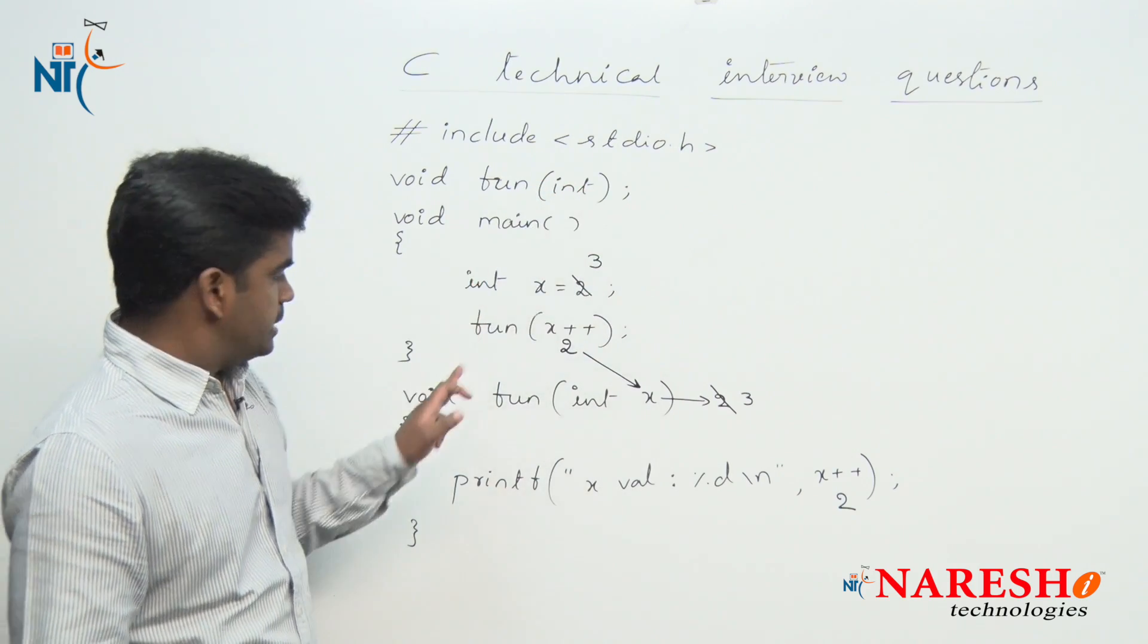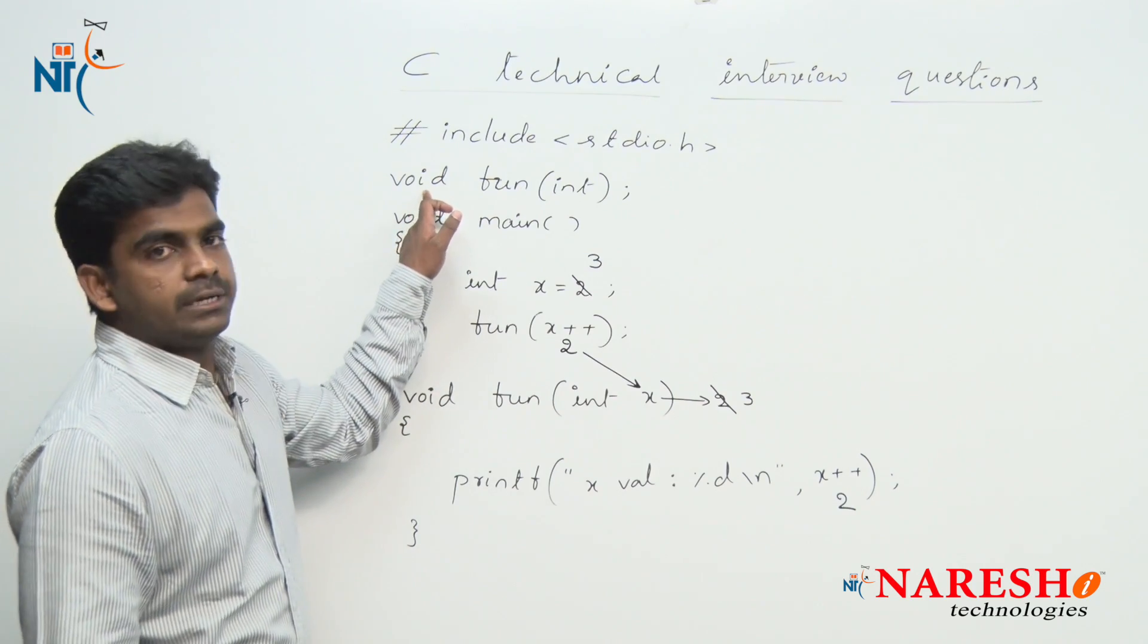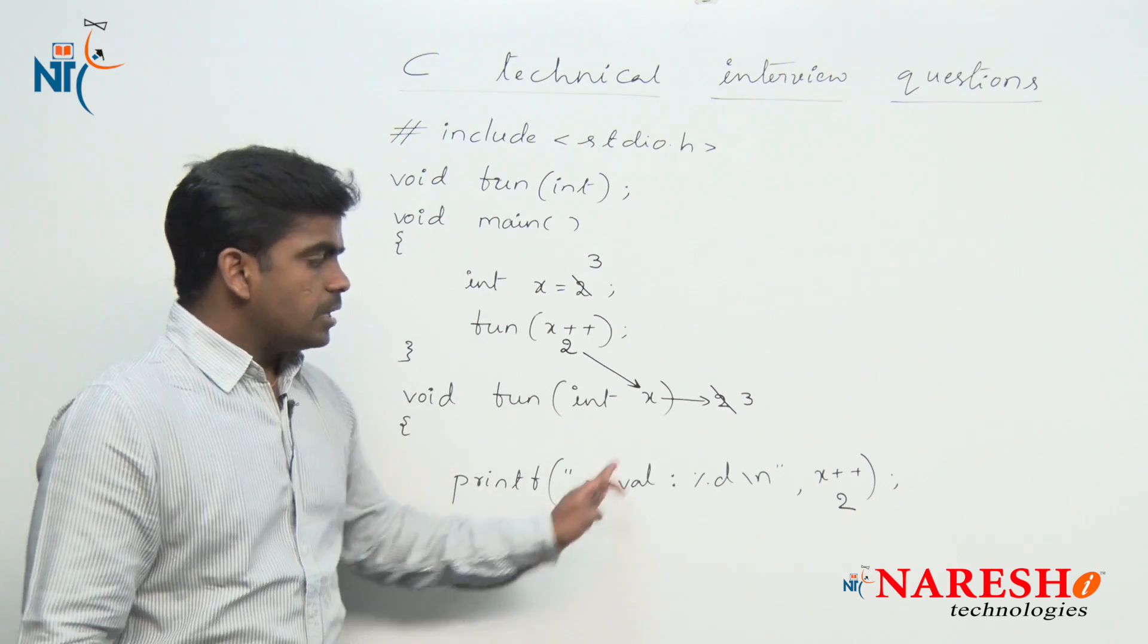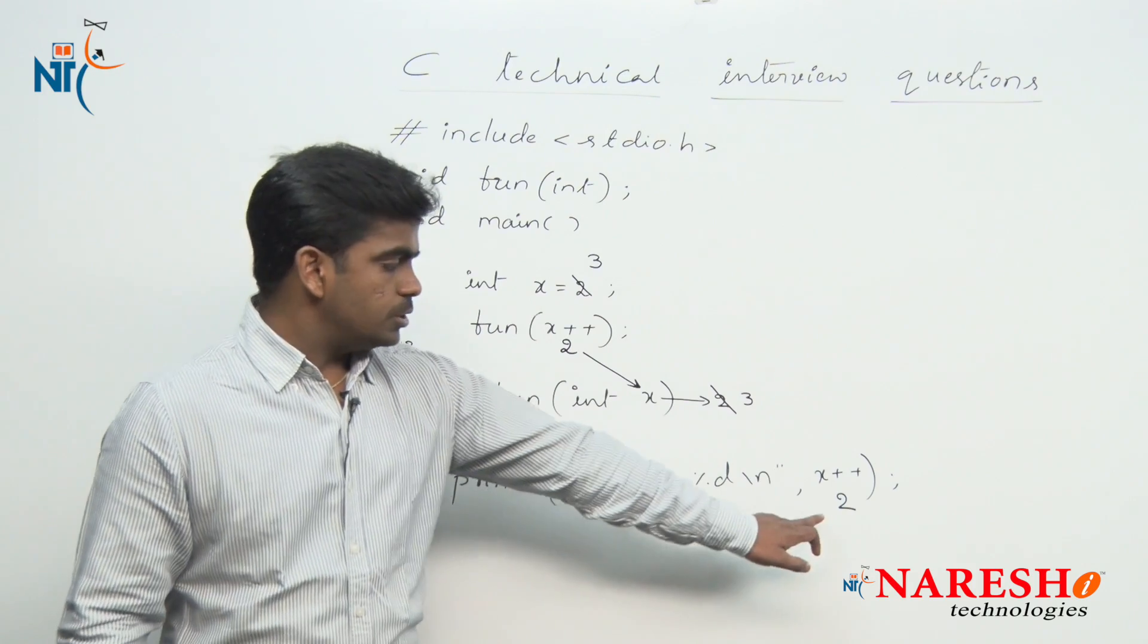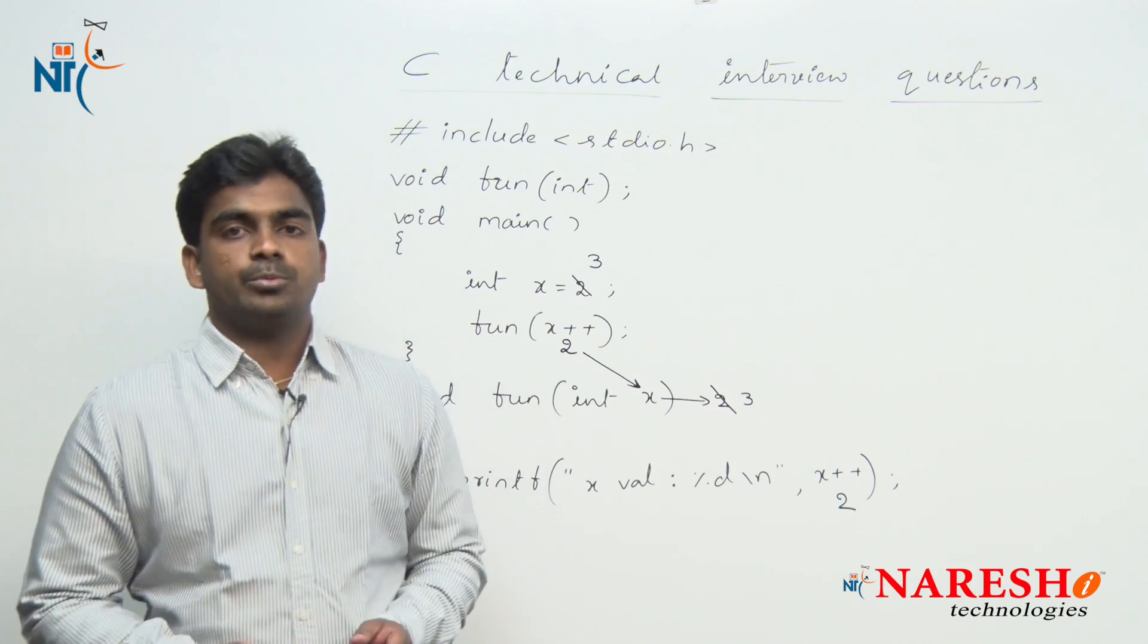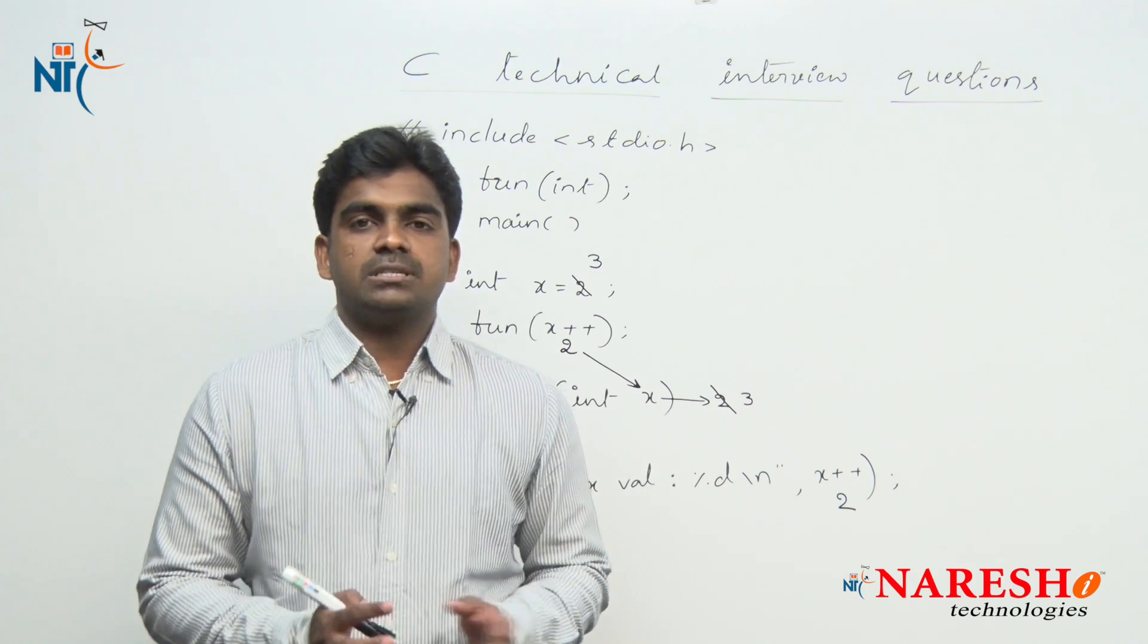It is not returning anything, so return type is void. So finally the output of the program is what? 2, right. So hope you understood. For more videos please subscribe to Naresh IT channel.